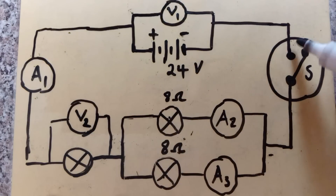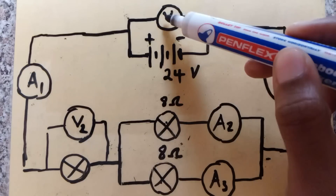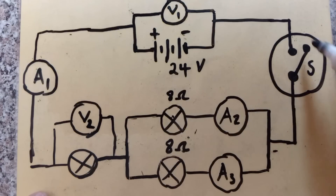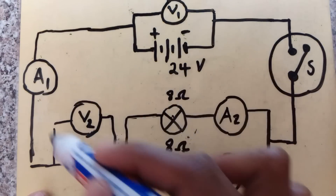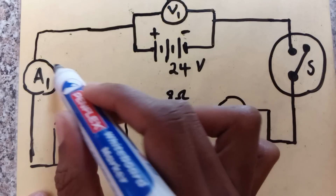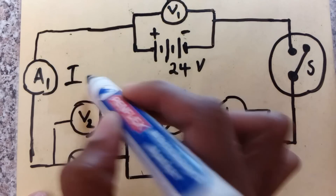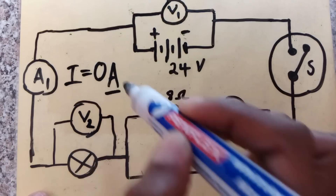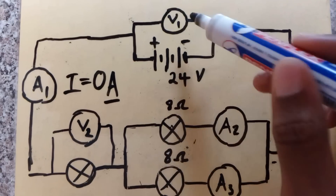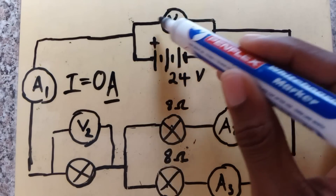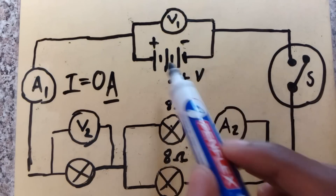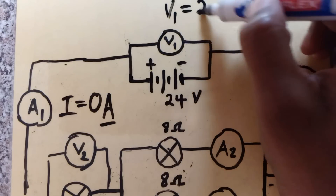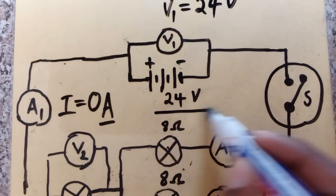The question asks: if the switch is open, what will be the readings on voltmeter V1 and ammeter A1? If the switch is open, there is no current flow in the circuit, so the reading on ammeter A1 will be zero amperes. However, voltmeter V1 will measure the potential difference across the terminals of the battery, so V1 will read 24 volts.